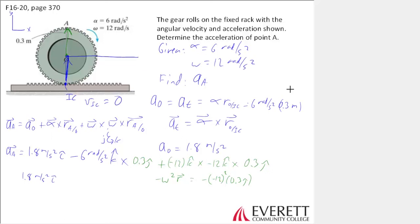We get a negative I, but we already have a negative 6. So it's going to be positive 1.8I. And we're going to add on to that 12 squared times 0.3, whatever that is, 43.2 minus 43.2J. That was from right here.